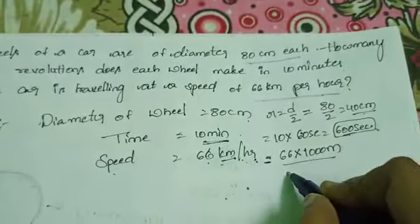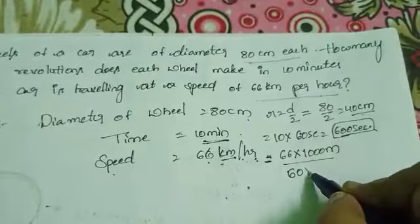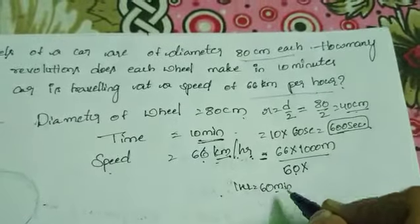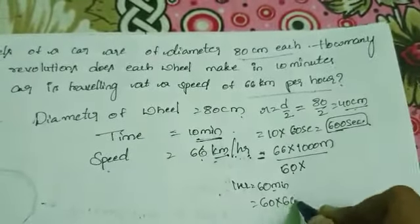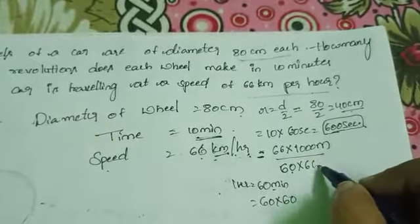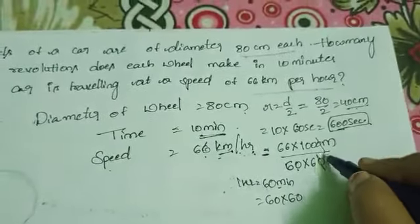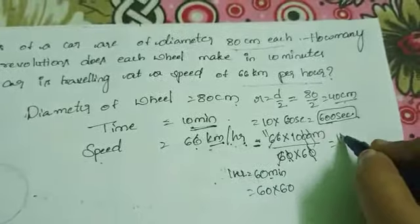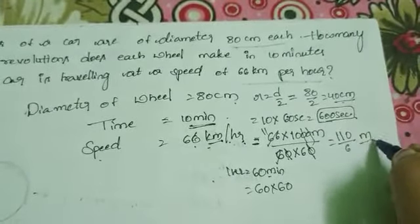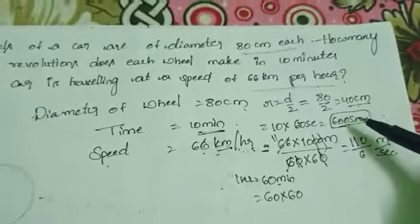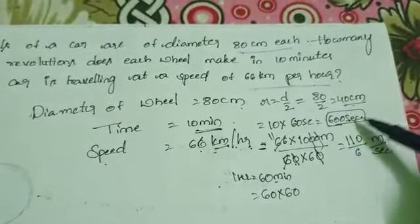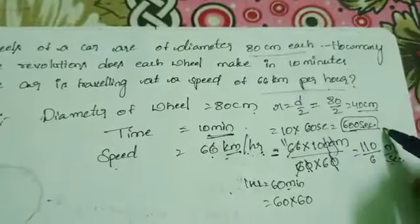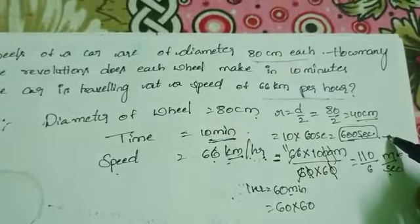Now convert speed from km per hour to meter per second. 66 km per hour — 1 hour equals 60 into 60 seconds, which is 3600 seconds. So 66 km per hour equals 66,000 meters divided by 3600 seconds, which gives 110 by 6 meters per second.